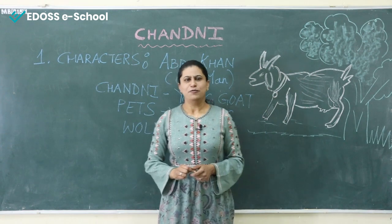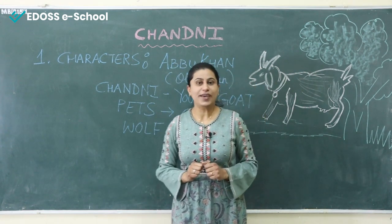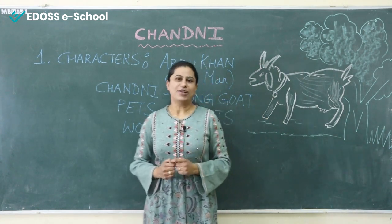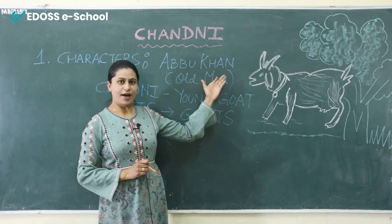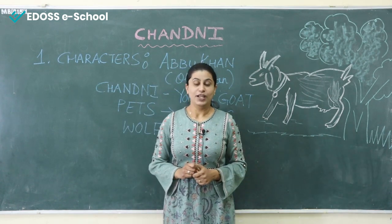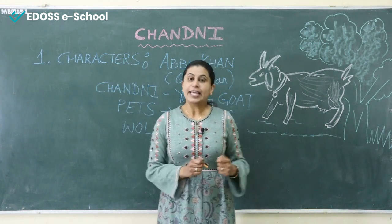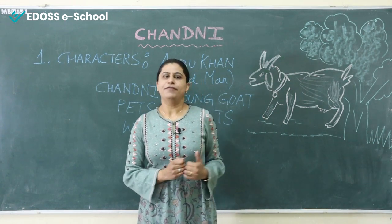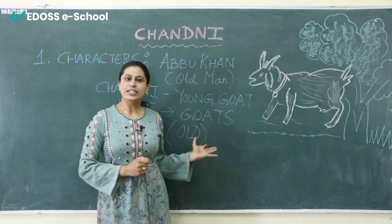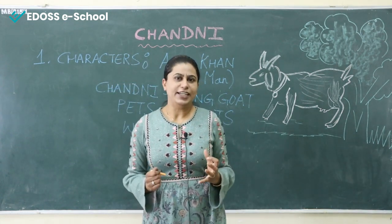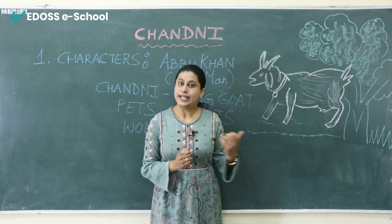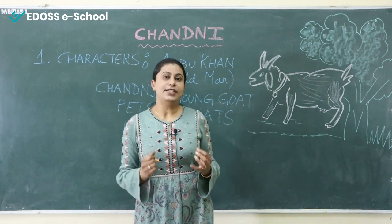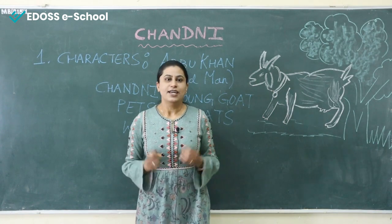This story begins with the same caption as we used to hear in our childhood — once upon a time. Once upon a time there was an old man, Abhu Khan. He used to live all alone with his pets. He kept goats as his pets. There was no other family member. He used to live in a small hut with his goats and was very much connected with all his pets. He used to take them out for grazing and provide them with good food. He actually treated all his pets like his own children.